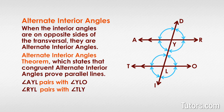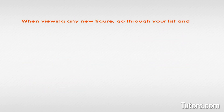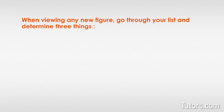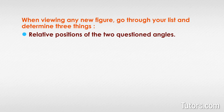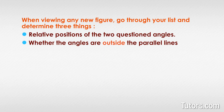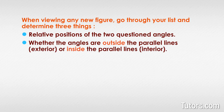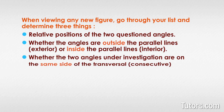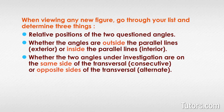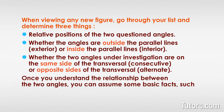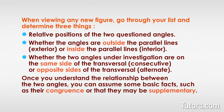You can use your newfound knowledge of angle relationships to solve algebraic challenges about geometric figures. When viewing any new figure, go through your list and determine: 1. The relative positions of the two questioned angles. 2. Whether the angles are outside the parallel lines (exterior) or inside the parallel lines (interior). 3. Whether the two angles under investigation are on the same side of the transversal (consecutive) or opposite sides of the transversal (alternate). Once you understand the relationship between the two angles, you can assume some basic facts, such as their congruence or that they may be supplementary.